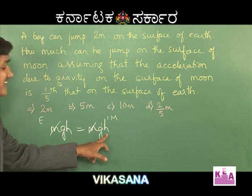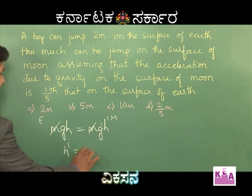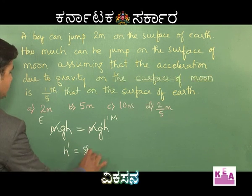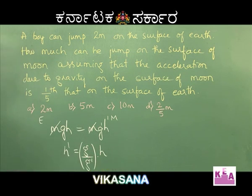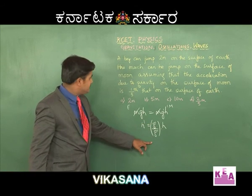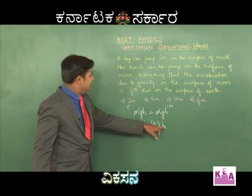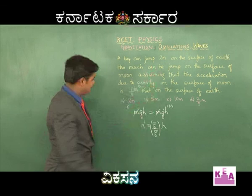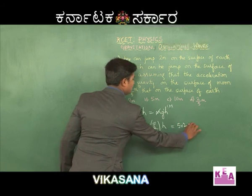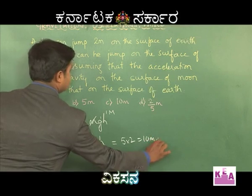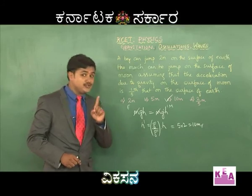What we need to find is H-dash. I'll directly write the expression: H-dash equals G divided by G-dash, times H. G by G-dash is 5, and 5 times H is 5 into 2, which equals 10 meters. Therefore, option C is the correct answer.